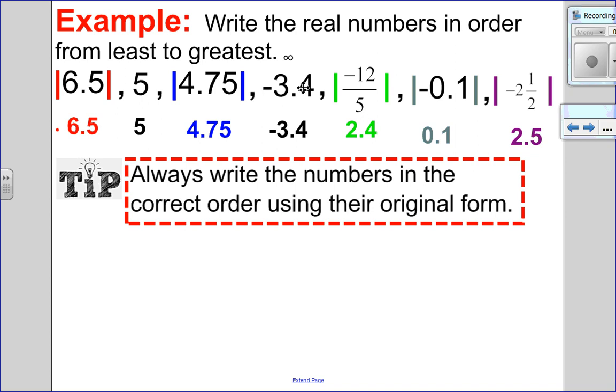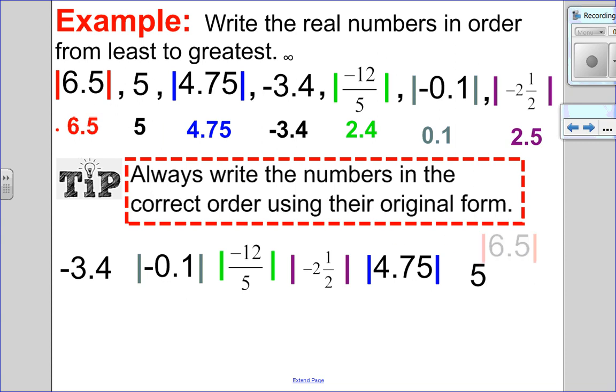So let's put this in order from smallest to biggest. Before I do that, I have a little tip for you. Always write the numbers in the correct order using their original form. So let's look. The smallest number I see is negative 3.4. Then looking at it again, the next number I see is 0.1. So I always go from where they came from. Then I see 2.4. The next smallest one I see is 2.5. And I see positive 4.75, and then positive 5, and last but not least, the absolute value of 6.5. So that would be the order from smallest to biggest in original form.